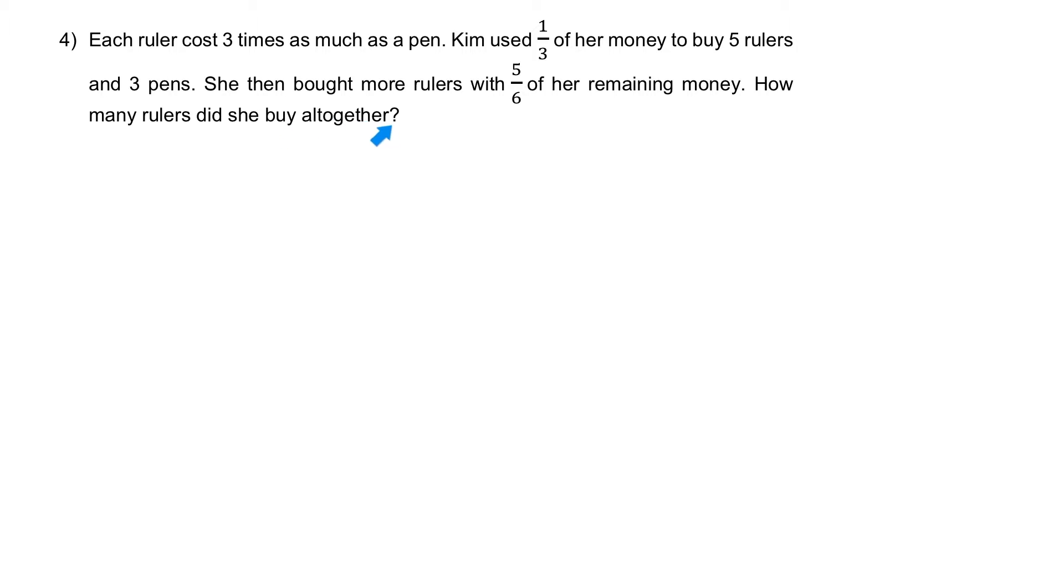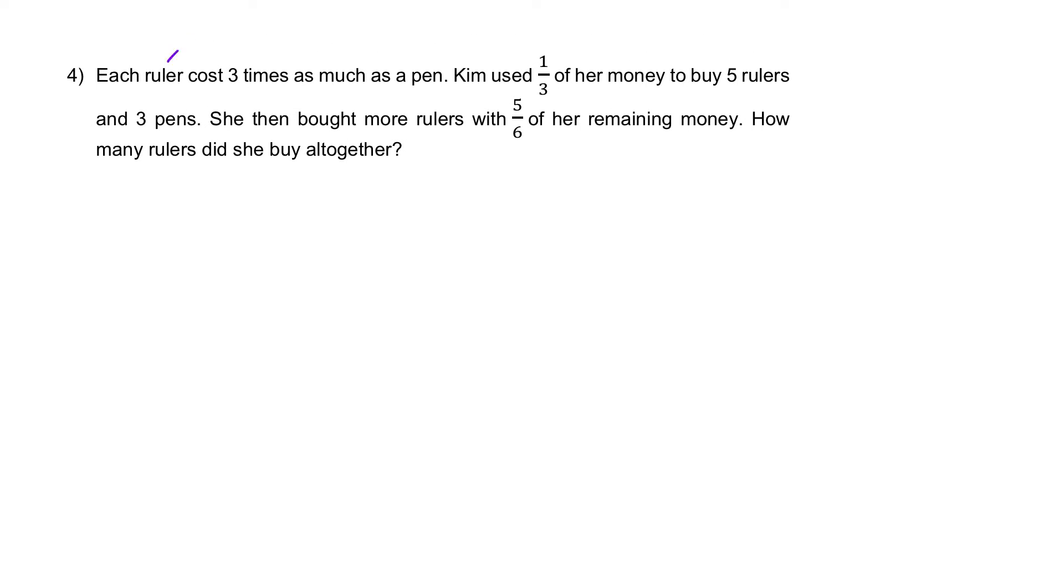So let's start from the first sentence: each ruler costs three times as much as a pen. It means one ruler equals three units. The pen will be one unit.